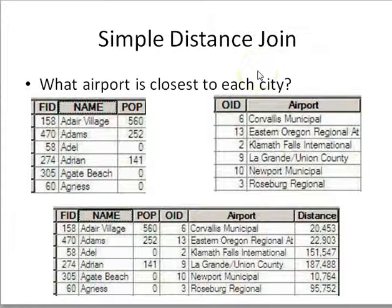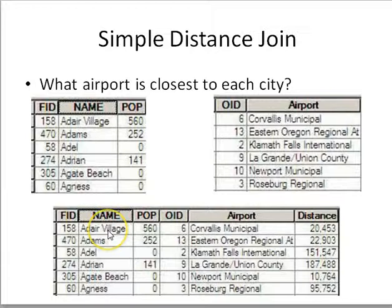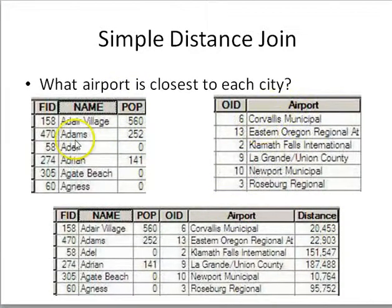Here's an example of a simple distance join. I have two point files — one showing cities and one showing airports. If I do a simple distance join, the destination depends on which field I start with. If I want to know the closest airport to each city, the city is my destination. I join one record from the airport — just which airport is closest to Adair Village. The result automatically includes a distance field and appends the name of the closest airport.